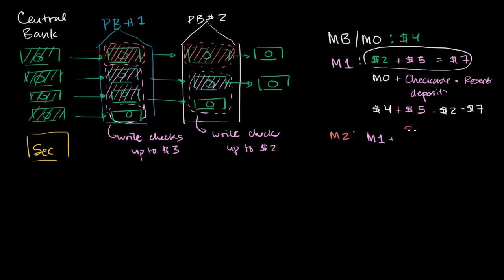M2 includes M1 plus things that are very easy to convert to M1 — savings accounts, money market accounts (which give slightly higher interest but have some restrictions on access), and small dollar value time deposit CD accounts. For simplicity in this example, it would be our $7 of M1 plus the $2 of savings accounts.